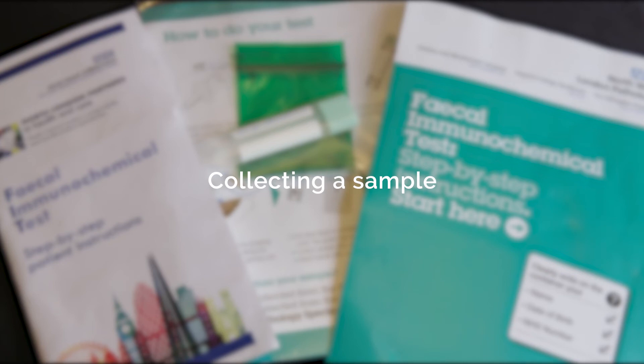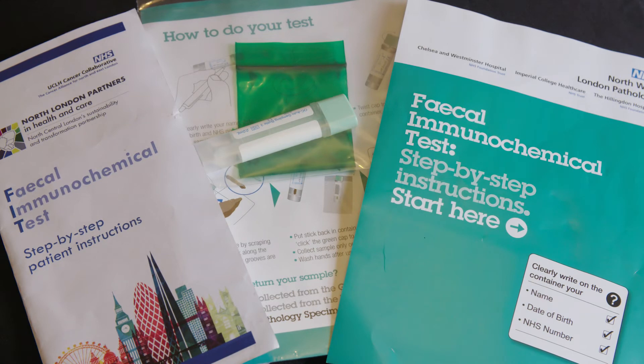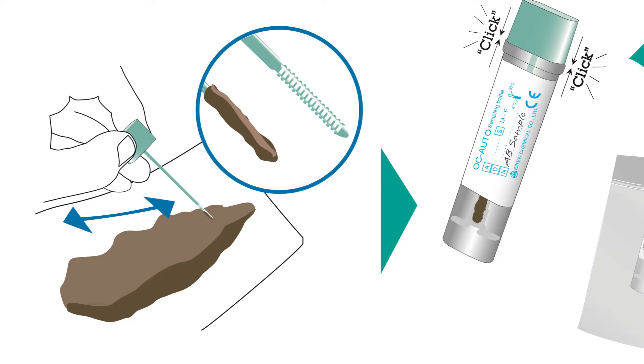There are a few important things to remember about collecting a sample, and the patient information leaflet explains that. The first thing that's probably most important is getting the most appropriate sample. Blood is on the outside of faeces, so it's really important to use the green picker to stroke up and down the outside of the sample.